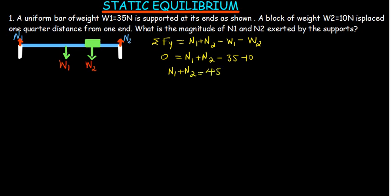So N1 plus N2 is equal to 45. This is going to be the first equation that we are going to have. Now again, since I don't have any component in the X, I am going to look at the net torque. So the net torque on this system is going to be equal to the anticlockwise torques and also the clockwise torques.